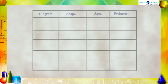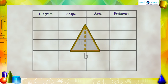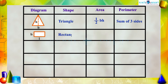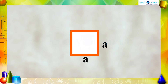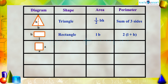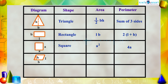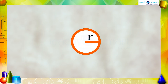Let's have a quick recap. Today we discussed the area and perimeter of some plane shapes such as triangle, rectangle, square, parallelogram, and circle.